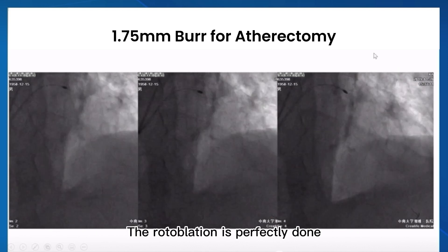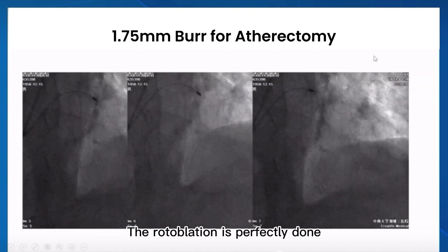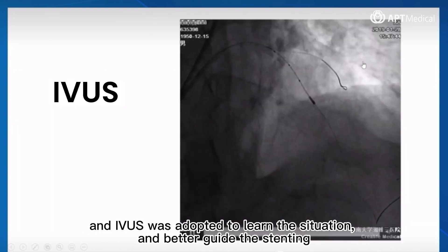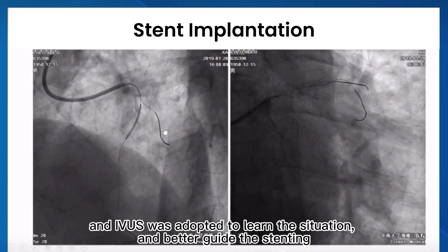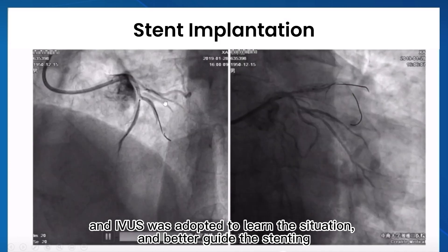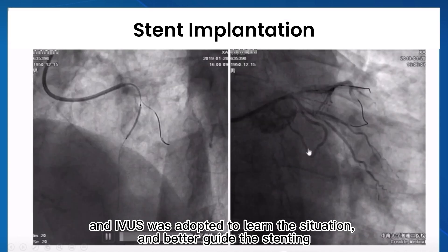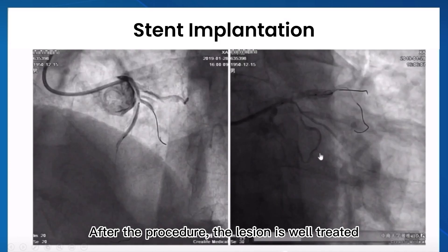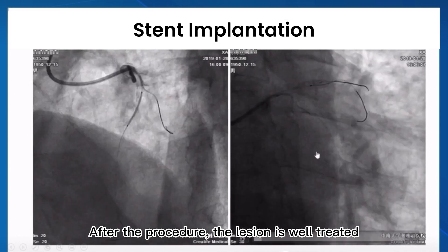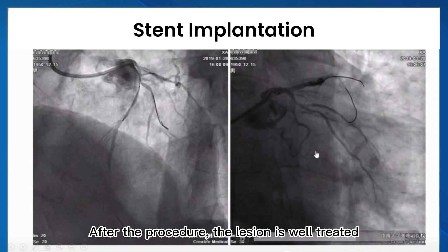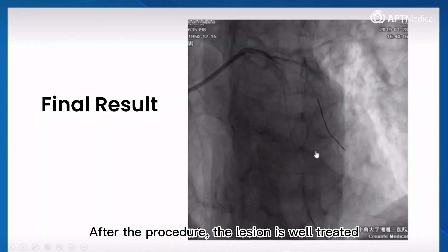The rotational ablation is perfectly done, and IVUS was adopted to assess the situation and better guide the stenting. After the procedure, the lesion is well treated.